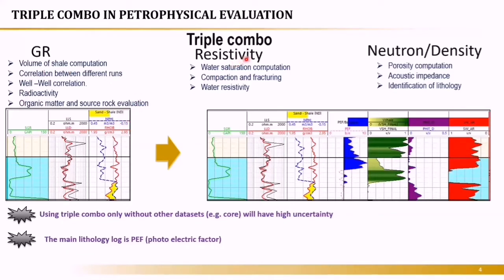Gamma ray indicates radioactivity and organic matter for source rock evaluation. The resistivity is called the fluid tool — it's not a correlation tool. It differentiates between oil, gas, and water, and its most important function is water saturation computation. It can also determine water resistivity, RW. The neutron, density, and sonic tools are porosity tools. They are used for porosity and acoustic impedance, and for lithology identification.